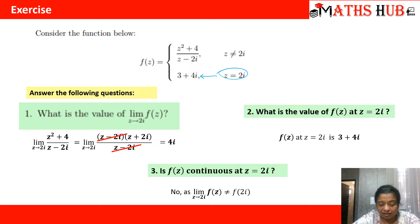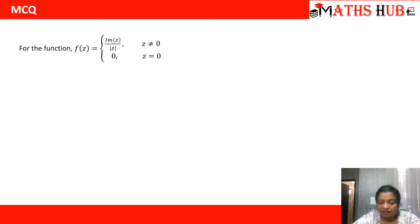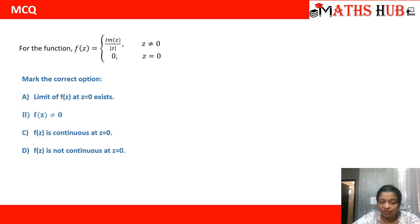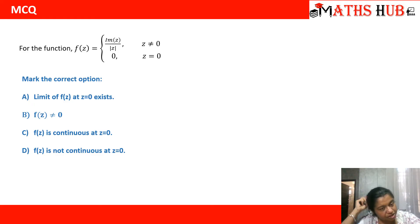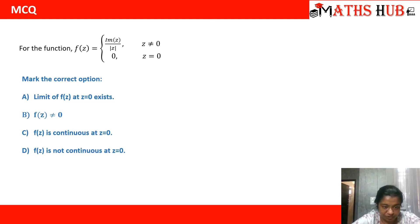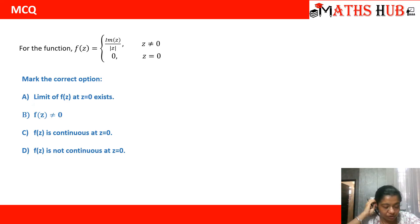I hope the concept of continuity is clear. Now let's have an MCQ question. For the function f of z equal to the imaginary part of z upon mod z, where z is not equal to 0, and equal to 0 when z equals 0, you have to mark the correct option: limit of the function at z equal to 0 exists; f of z is not equal to 0; f of z is continuous at z equal to 0; or f of z is not continuous at z equal to 0.